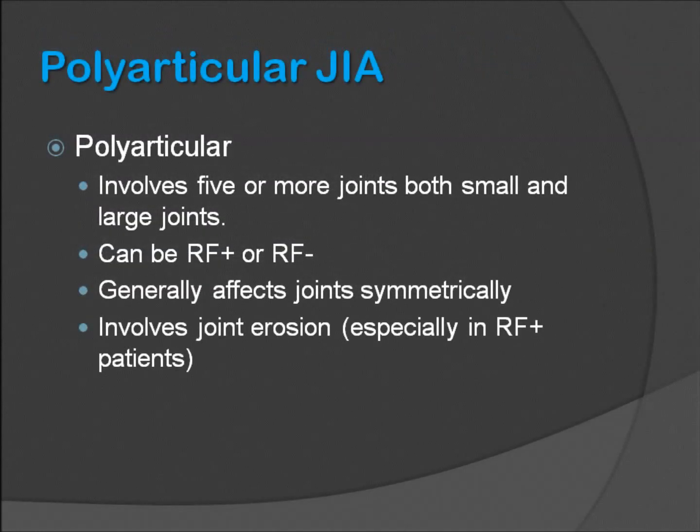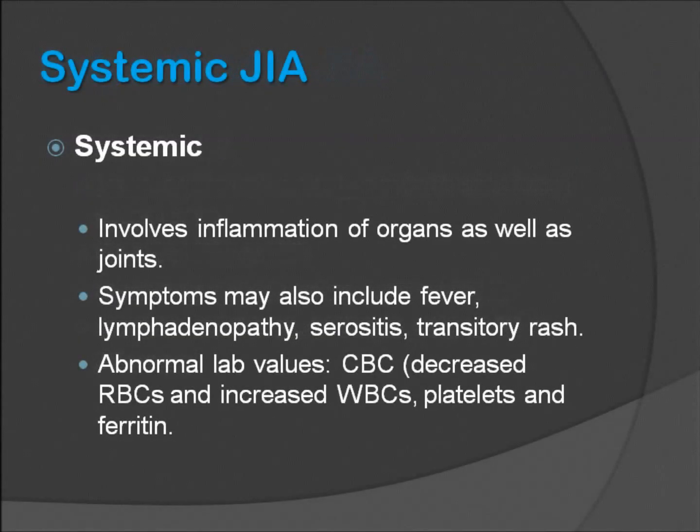Slide 9 shows some features of polyarticular JIA. By definition, it involves five or more joints, both small and large. It could be rheumatoid factor positive or negative. Generally, the joints affected are symmetric, and it would involve joint erosions, especially in rheumatoid factor positive patients.